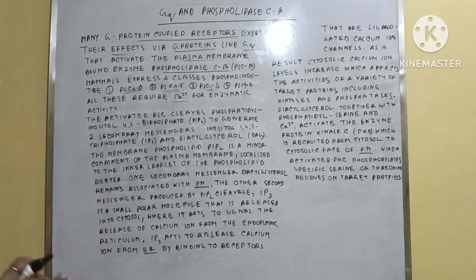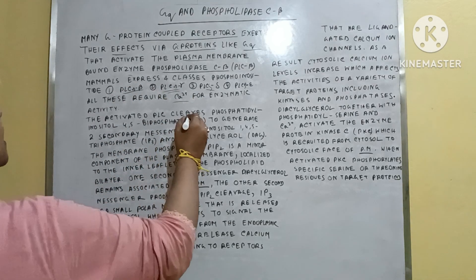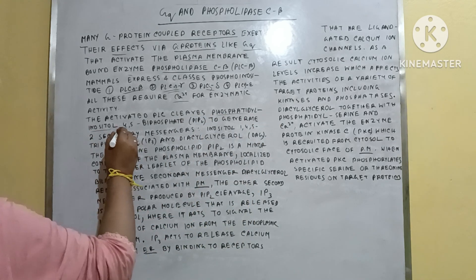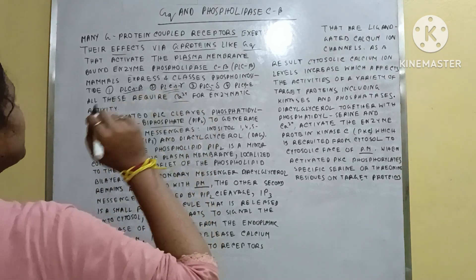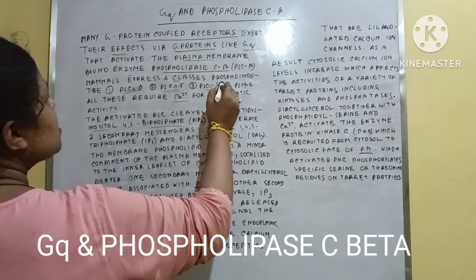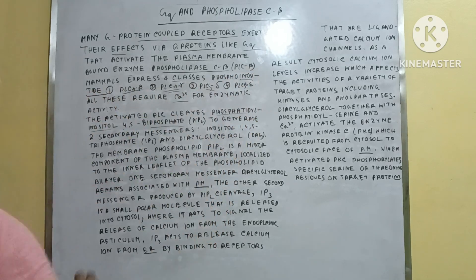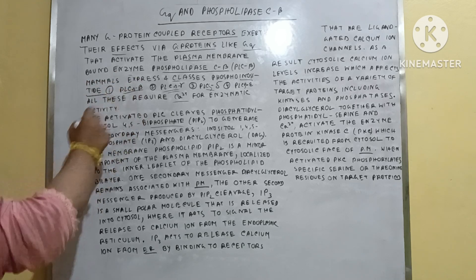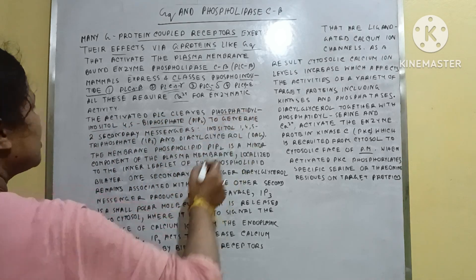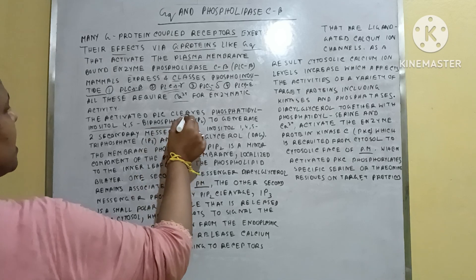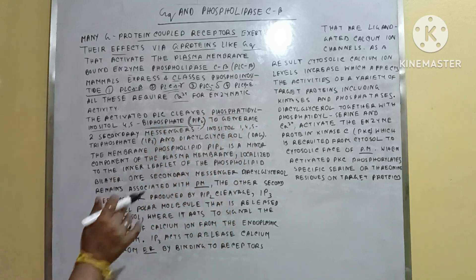The activated PLC cleaves phosphatidylinositol-4,5-bisphosphate. I should mention that mammals express four classes of phosphoinositide-specific PLC. The activated PLC cleaves phosphatidylinositol-4,5-bisphosphate (PIP2) and breaks PIP2 into two secondary messengers.